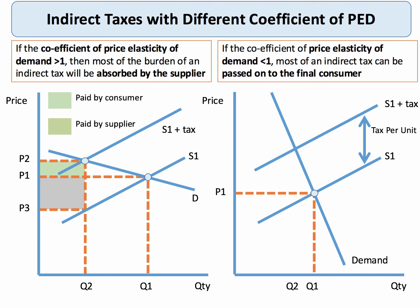Now contrast this with a more inelastic demand. We put a tax on the product and the tax causes the supply curve to shift up as before. The price rises from P1 to P2, and the vertical distance of the tax is P2 to P3. That small grey area at the bottom is absorbed by the producer — they managed to raise the price from P1 to P2 but not by the full amount of the tax, so they have to absorb that portion.